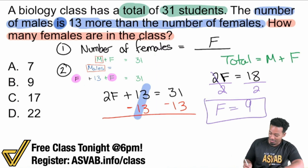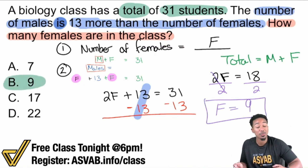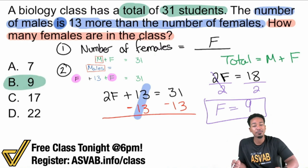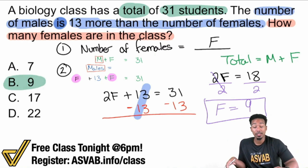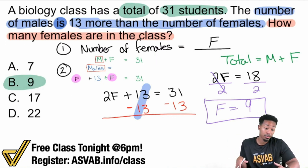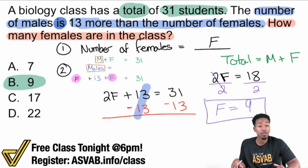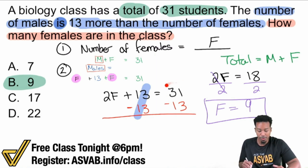So we have 9 females in the class. And if you want to check your work, plug it back in. You have 9 females and 13 more males — so 9 plus 13 is 22. So 22 males and 9 females added together still gives you 31 total students.